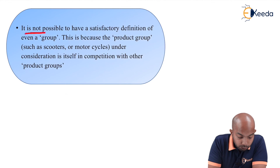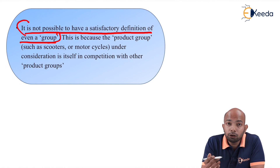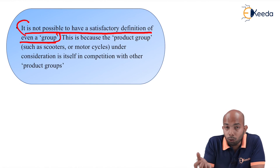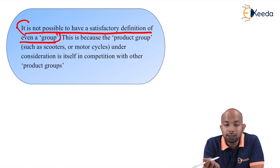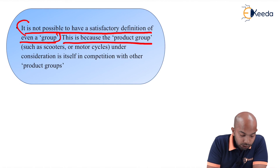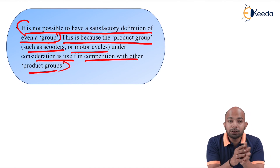It is not even possible to have a satisfactory definition of a group. You cannot call a group of firms in monopolistic competition a group in the true sense, because every firm deals in different products which are only slightly related to each other based on certain features. All those handful sellers are selling one product with certain differentiation — product A, product B, and product C will each have certain different patterns and features.